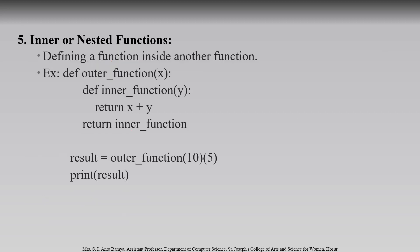Next is inner or nested functions. When one function is created inside another function, it is called a nested function. Here we have two functions — an outer function and an inner function. There is one tab space for the outer function body, and again one tab space for the inner function body. The inner function returns 'x + y', and that return value goes to the outer function. When we call 'outer_function(10, 5)', the result is 10 + 5 = 15.